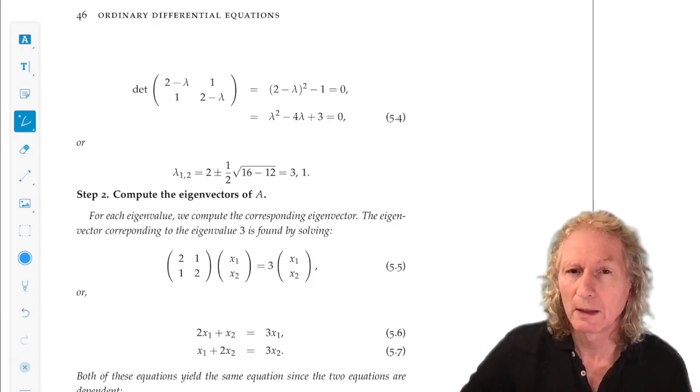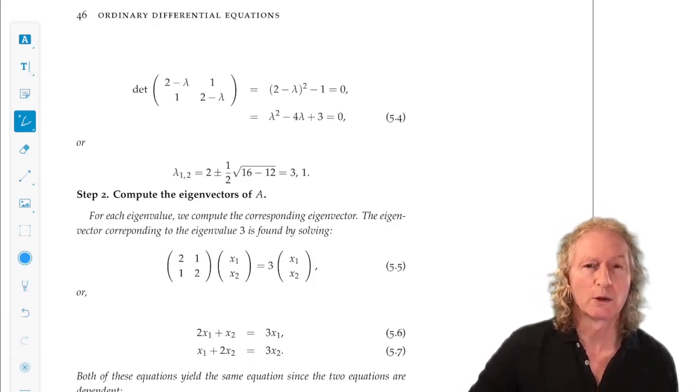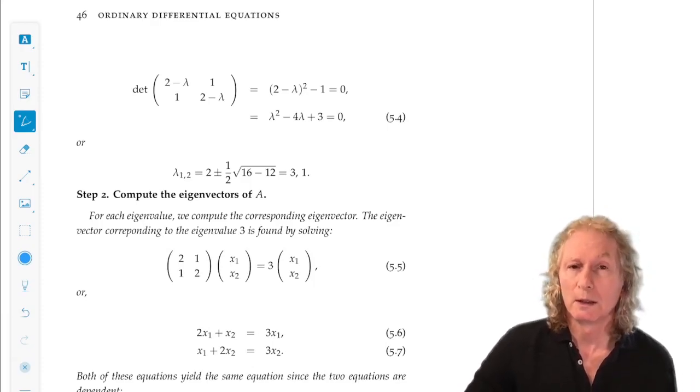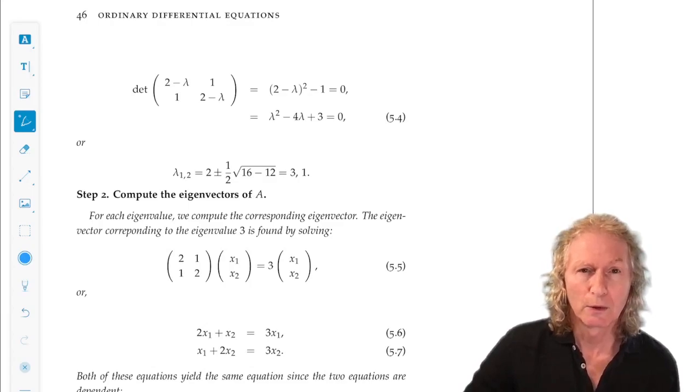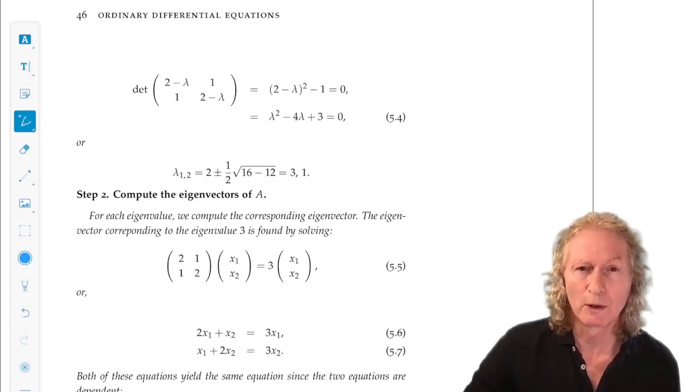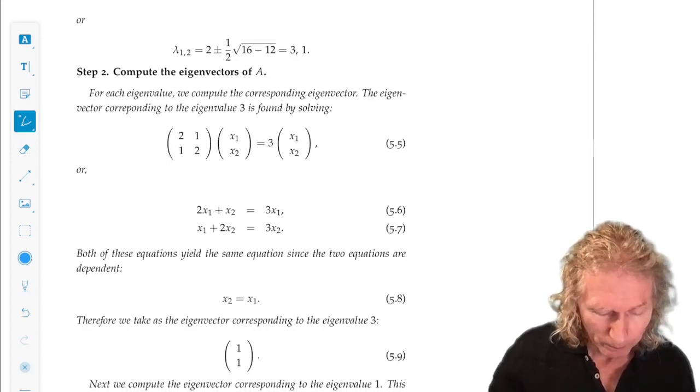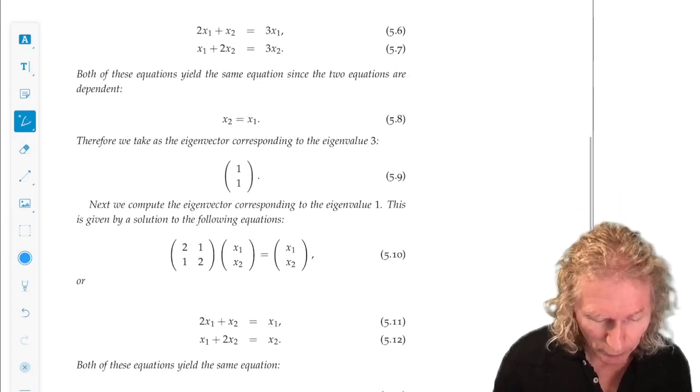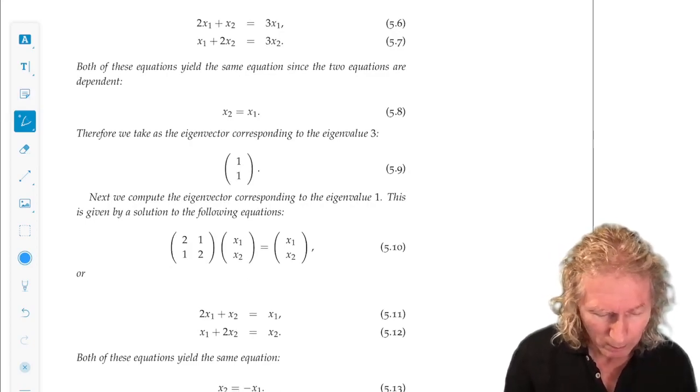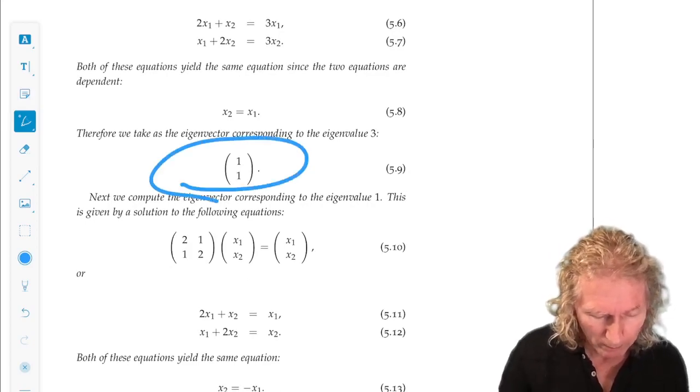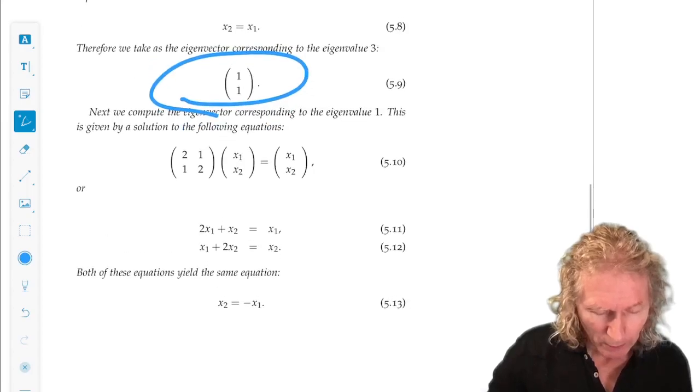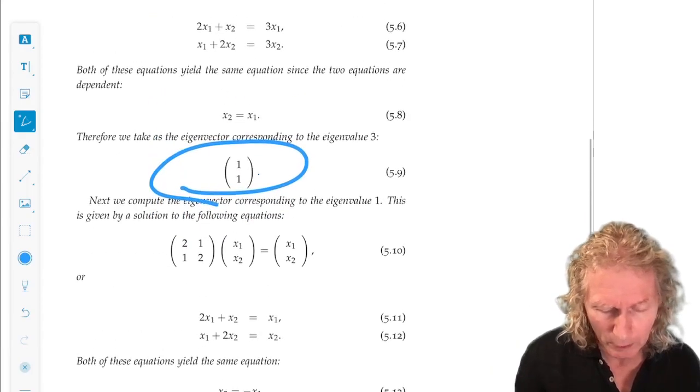Okay. And then, for each eigenvalue, we compute the eigenvector. We know there will be two linearly independent eigenvectors because the eigenvalues are distinct. Okay. So, the eigenvector corresponding to the eigenvalue 3 is 1, 1. And the eigenvector corresponding to the eigenvalue 1.